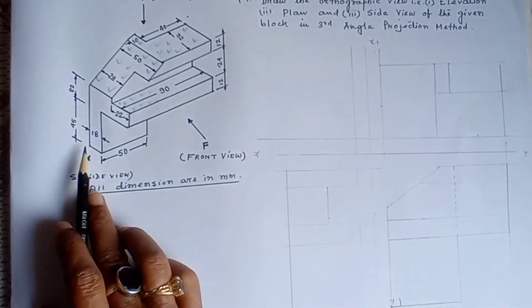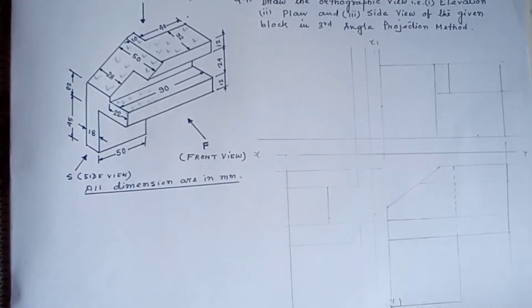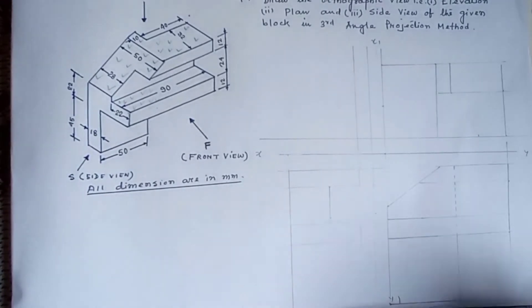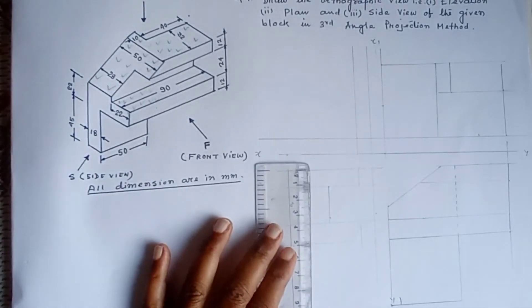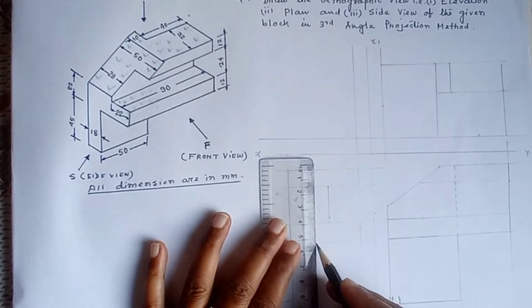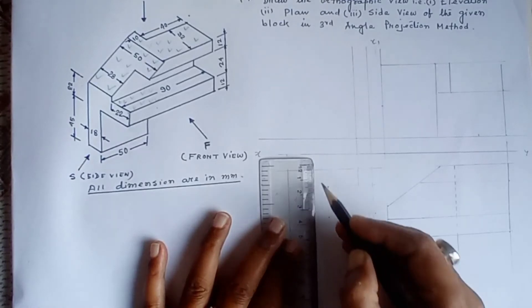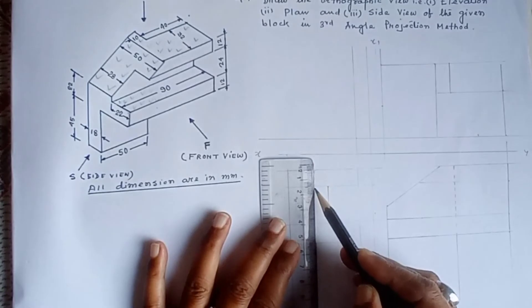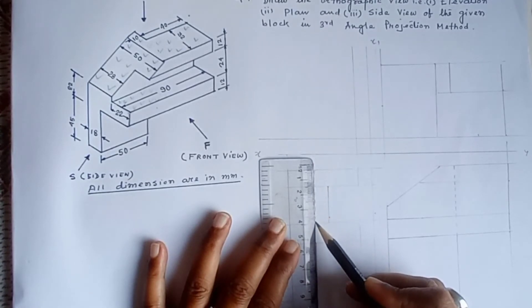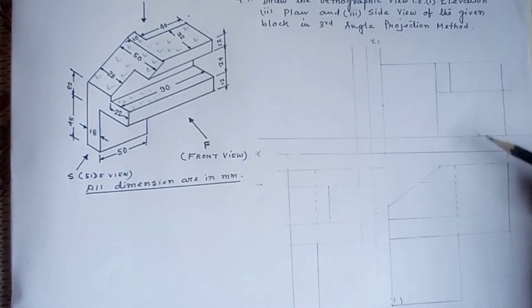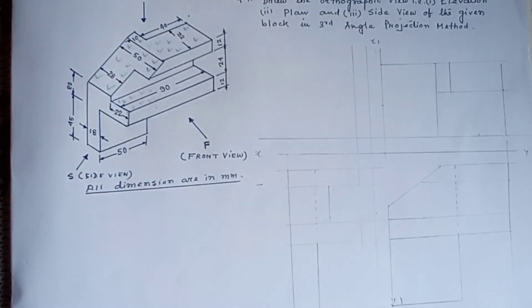Side view is 80. The side view is 80. So we can see that the side view is 80. We are going to open the frame and elevation. And then the side view is 80.